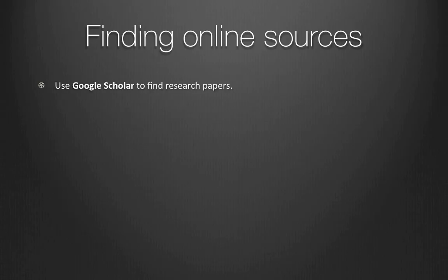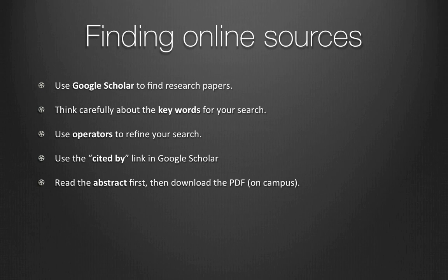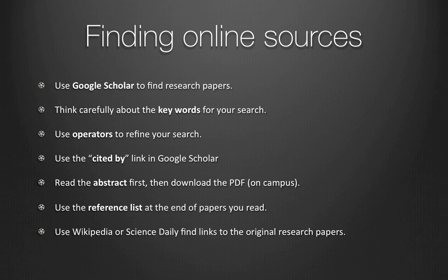To review: Use Google Scholar to find research papers. Think carefully about the keywords you use for your search. Use operators like plus and minus to refine your search. Use the 'Cited By' link in Google Scholar to get connections to more papers. Read the abstract first, then download the PDF — and make sure you do it on campus so it's free. Use the reference list at the end of papers that you read. And finally, use Wikipedia or Science Daily to find links to the original research papers.